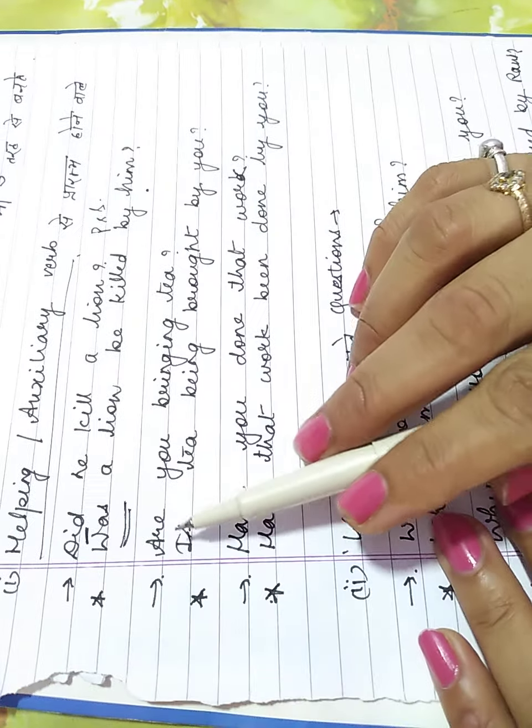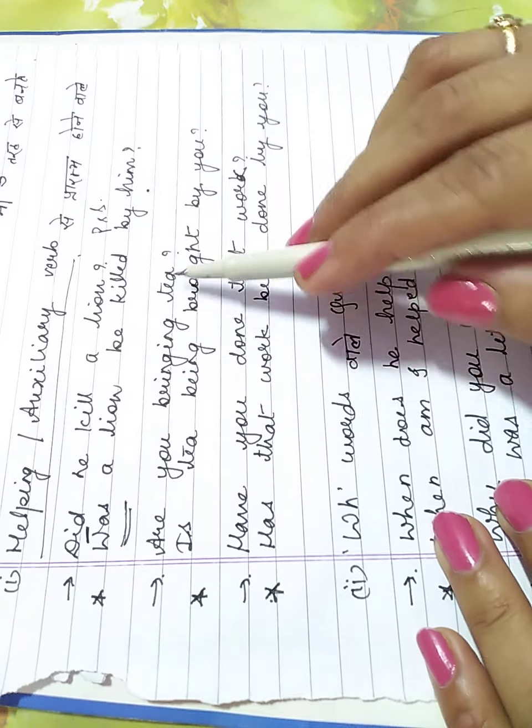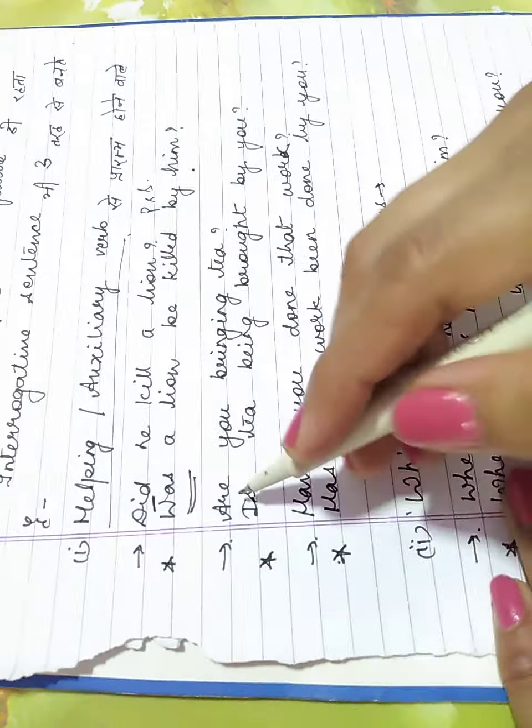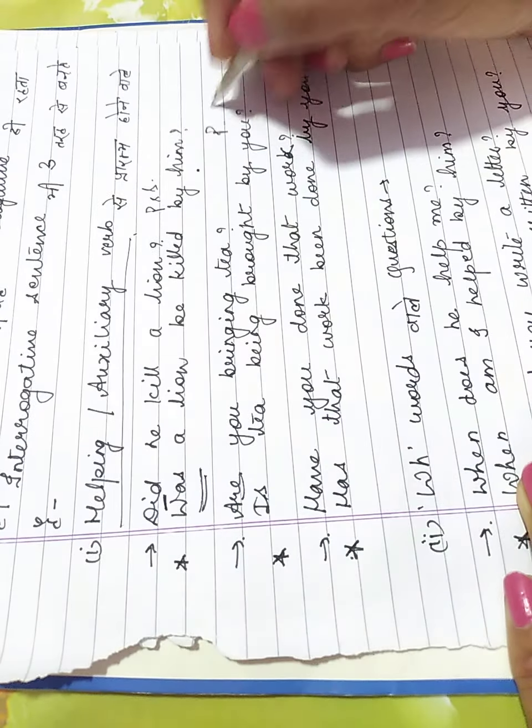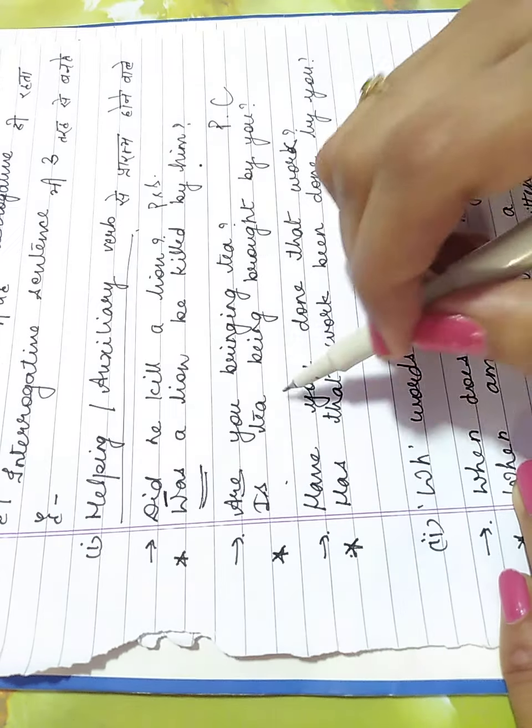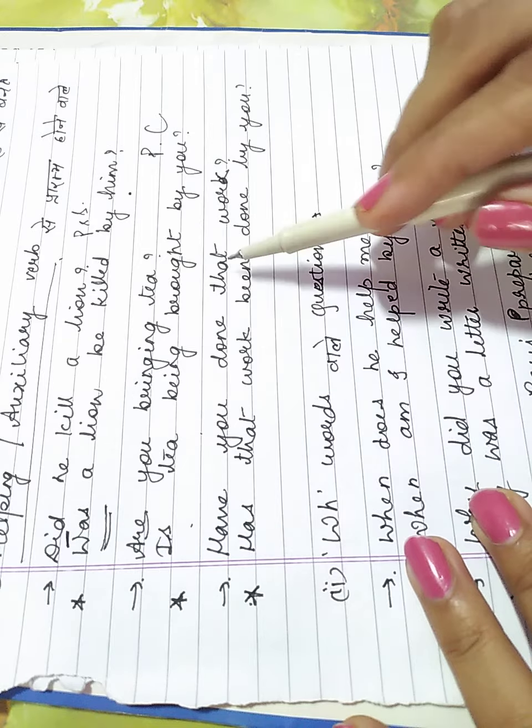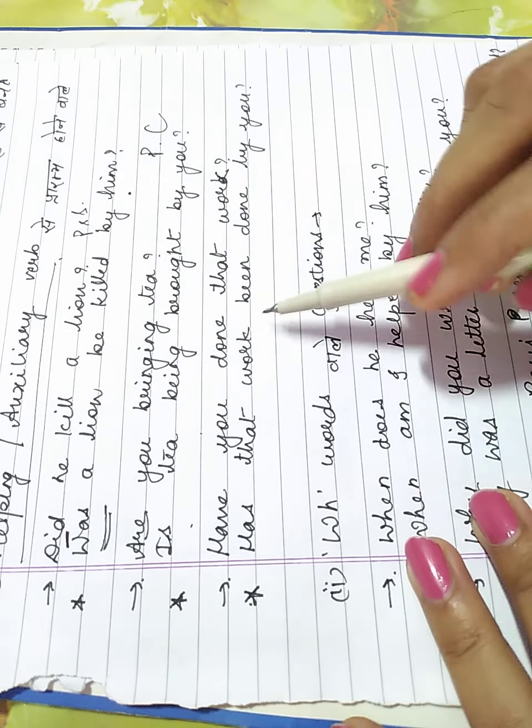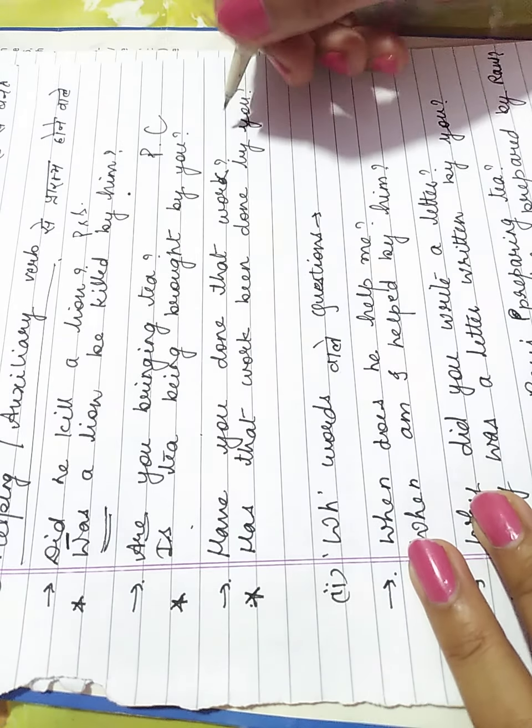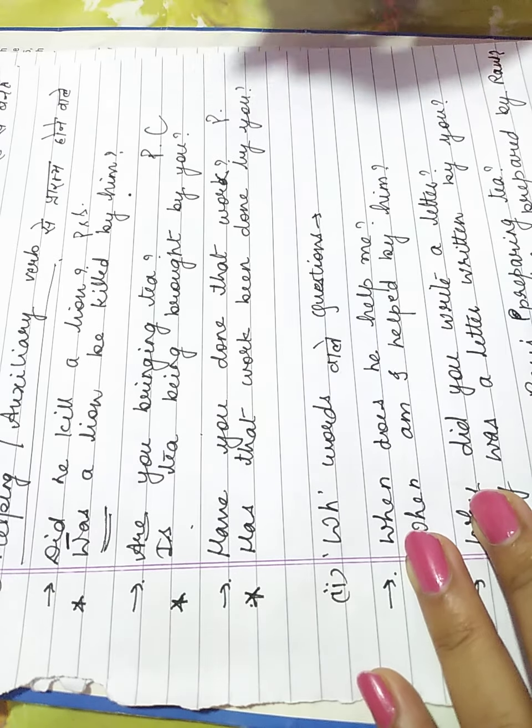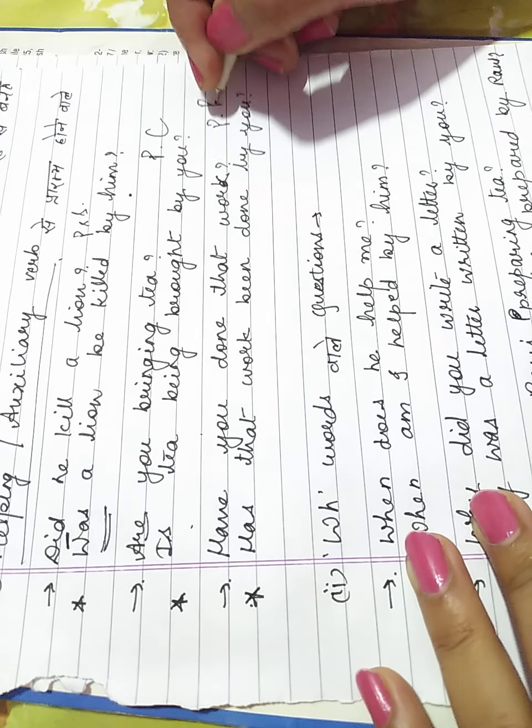Second sentence as my example: Are you bringing tea? So, present continuous: Is tea being brought by you? Third: Have you done that work? Has that work been done by you? This is present perfect.